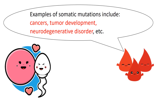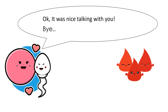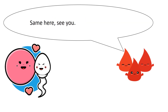Examples of somatic mutations include cancers, tumor development, neurodegenerative disorders, etc. Examples of germline mutations include hemophilia, Down syndrome, 18 trisomy, etc. It was nice talking with you. Bye. Same here, see you.